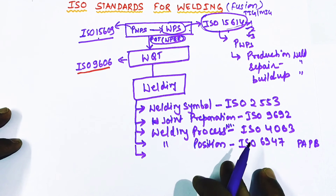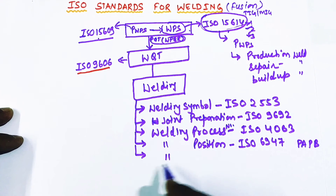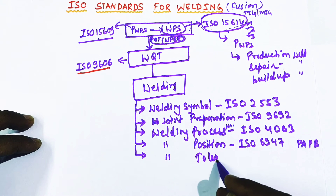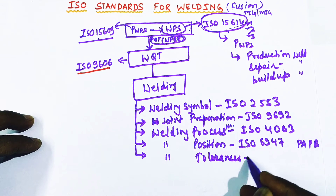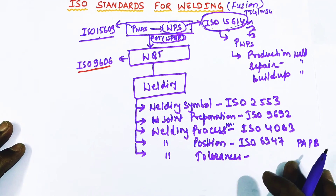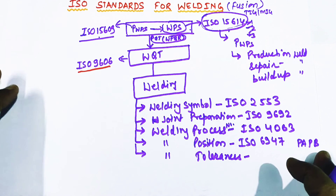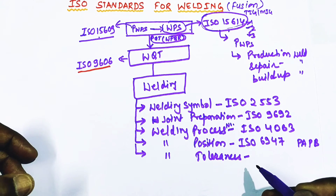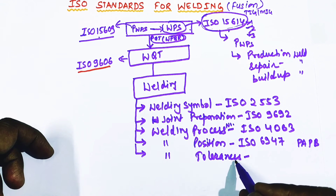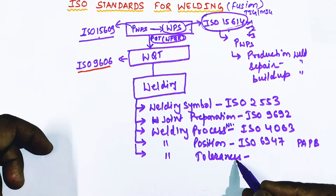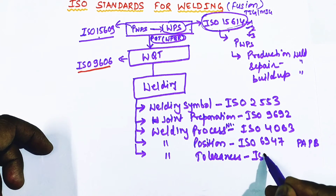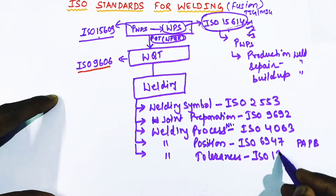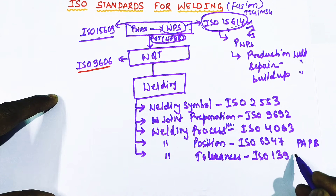The next standard to follow for welding is for welding tolerances. This is very important — many subscribers ask which code to follow for tolerance in welding. Please remember, for welding tolerance the ISO code is ISO 13920.